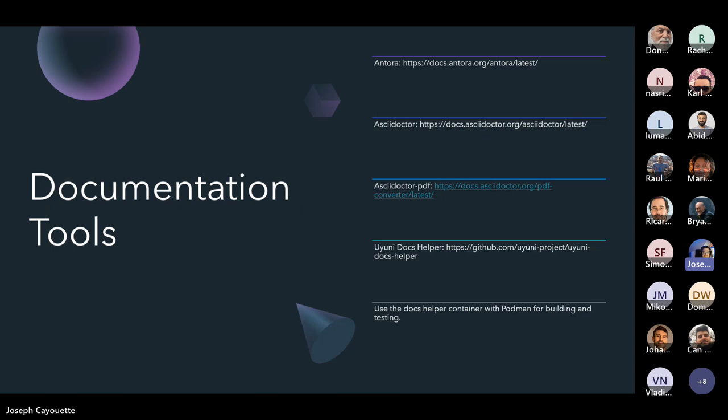As a brief overview of documentation tools we're using: we're working with Antora, which is a static site generator. We've got a backend based on AsciiDoctor, which allows us to produce AsciiDoctor PDFs based on the AsciiDoctor ADOC syntax, along with the AsciiDoctor PDF library. Julio created a wonderful container, the Uyuni Docs Helper, which simplifies your job — it's highly recommended to grab a copy and play around with it. You won't have to build the toolchain locally.